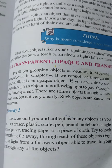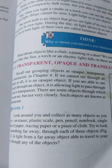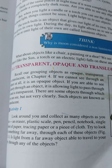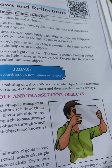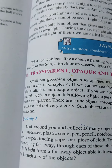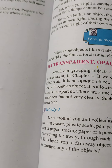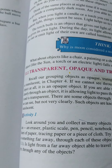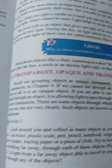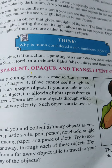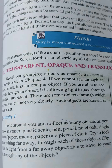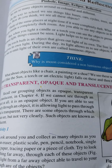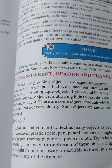But when you light a candle or turn on a torch, you can see the objects present in the room. Without light, things cannot be seen. Light helps us to see objects. Light is an agent which helps us to see objects.